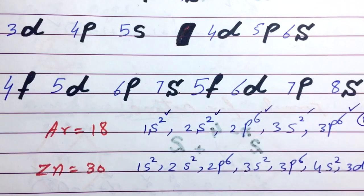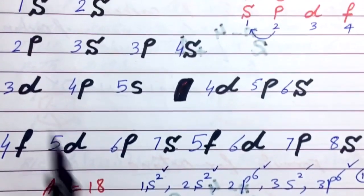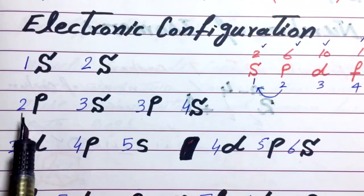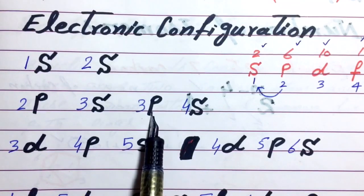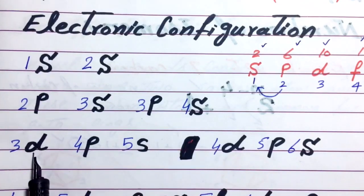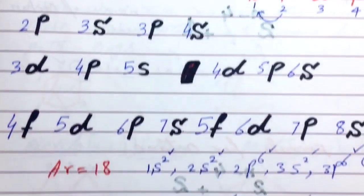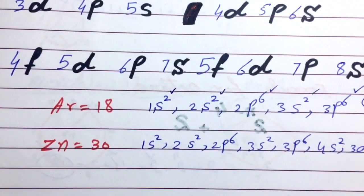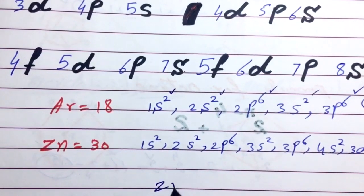Similarly for zinc, start from 1S2, 2S2, 2P6, 3S2, 3P6, 4S2 and 3D10. Because atomic number of zinc is 30, it means zinc has 30 electrons.